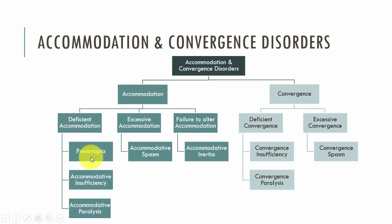With deficient accommodation, we have presbyopia, which you're all aware of and is normal, and we won't be discussing this in the video. We also have conditions such as accommodative insufficiency and accommodative paralysis. In relation to excessive accommodation, we have accommodative spasm, and the condition where we have a failure to alter accommodation is called accommodative inertia.